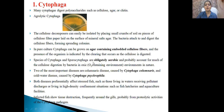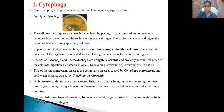Cytophaga and Sporocytophaga are obligate aerobic organisms, meaning oxygen is mandatory for their growth — an oxic environment is needed. Two different species of Cytophaga exist in nature: Cytophaga columnaris and Cytophaga psychrophila. Cytophaga columnaris is responsible for the disease called columnaris, which affects fishes. Cytophaga psychrophila is responsible for cold water disease — psychrophila referring to low temperature tolerance.